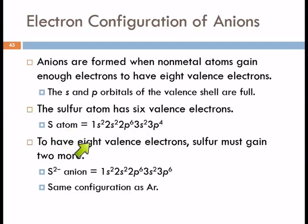So the sulfur atom is going to have six valence electrons. Here's the electron configuration for sulfur, it's got six valence electrons. How can it get eight? By gaining two more electrons. And those two more electrons will go into the 3p level and fill it up.